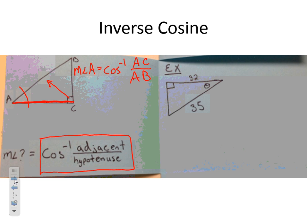If you want to find the measure of angle B, we do the same thing: inverse cosine of the adjacent, the side the angle is touching, which is BC, over the hypotenuse across from the right angle, AB.